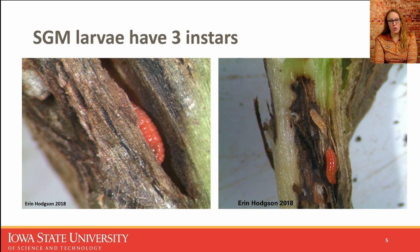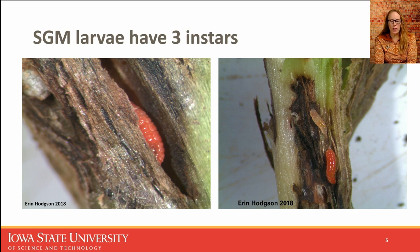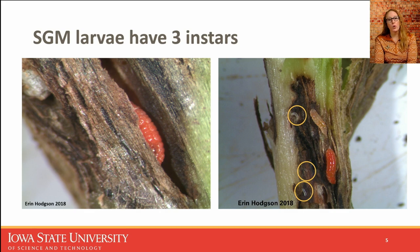Soybean gall midge has three larval instars — the economic life stage we care most about because they're feeding on soybean. The third instar is bright orange, fairly large at about a quarter inch in length, and fairly mobile. Even though they don't have legs or appendages, they can be quite wiggly outside the plant. First and second instars are harder to see, not only because they're smaller but because they're translucent. As they feed, they get bigger and take on more color as well.